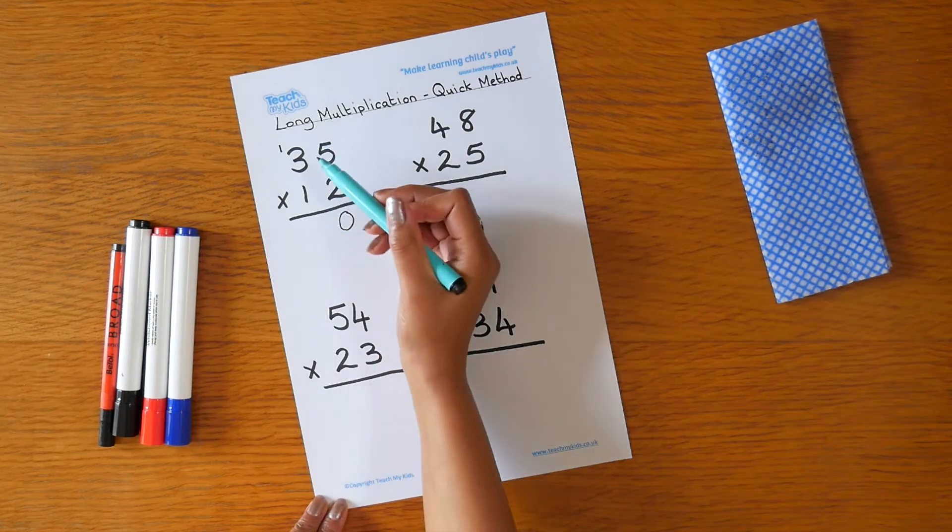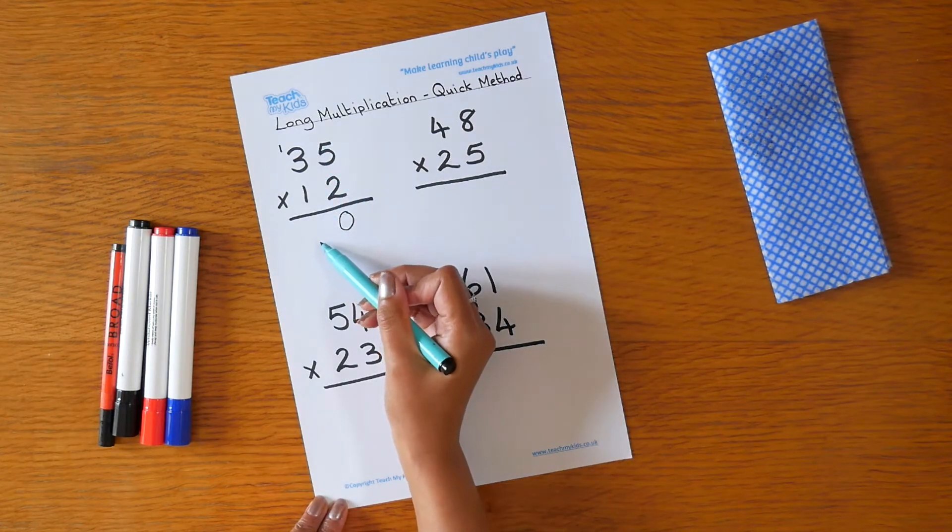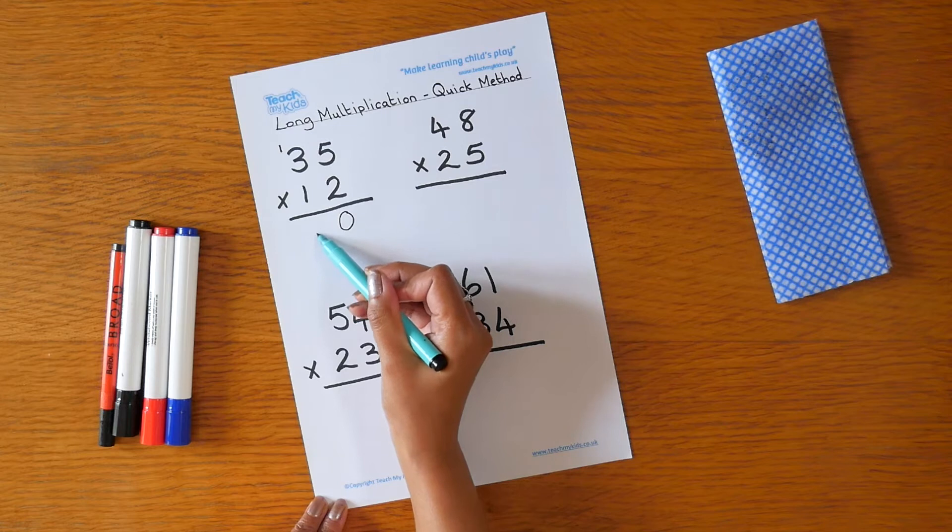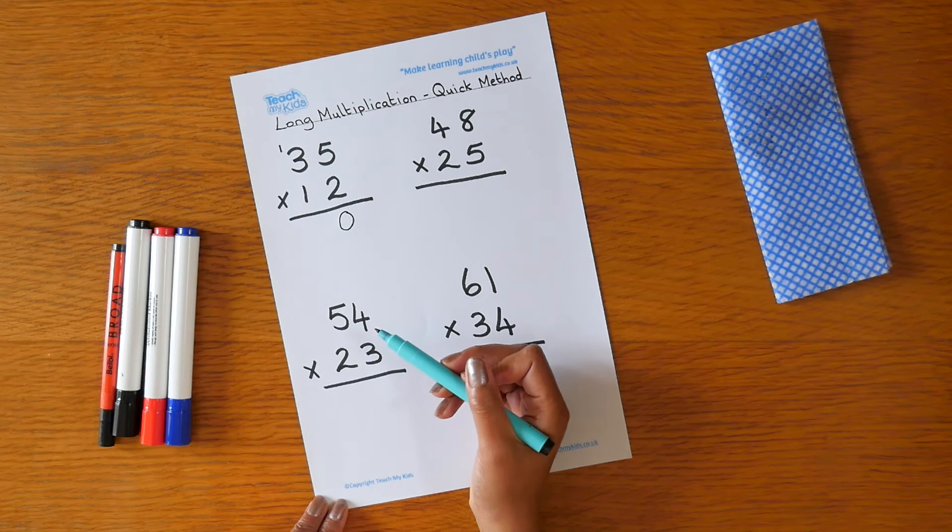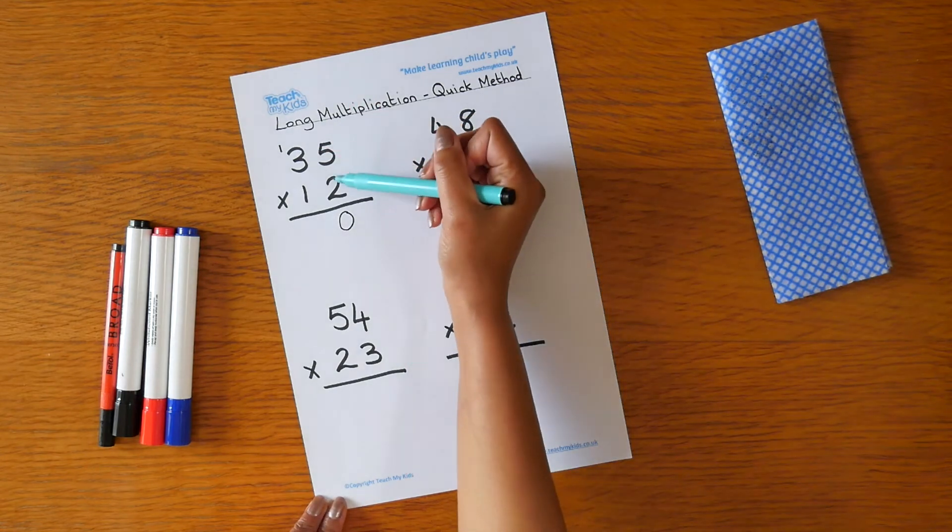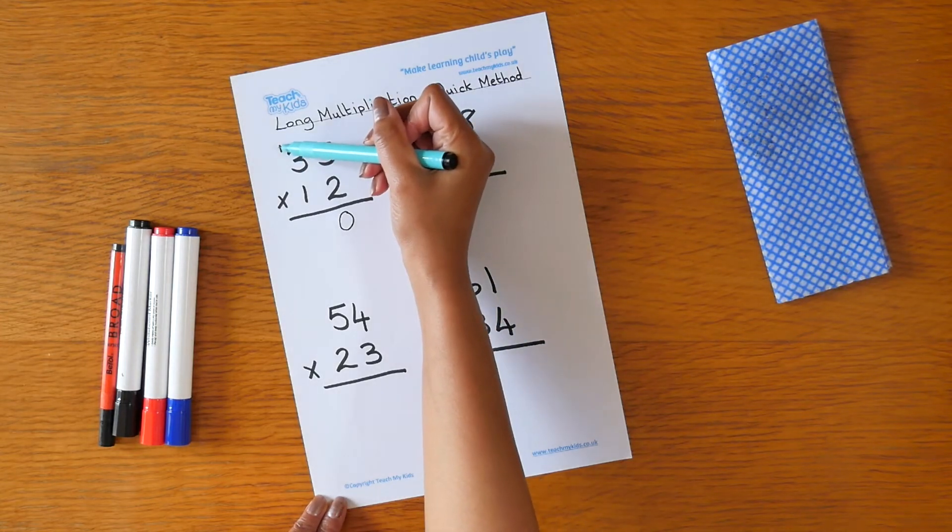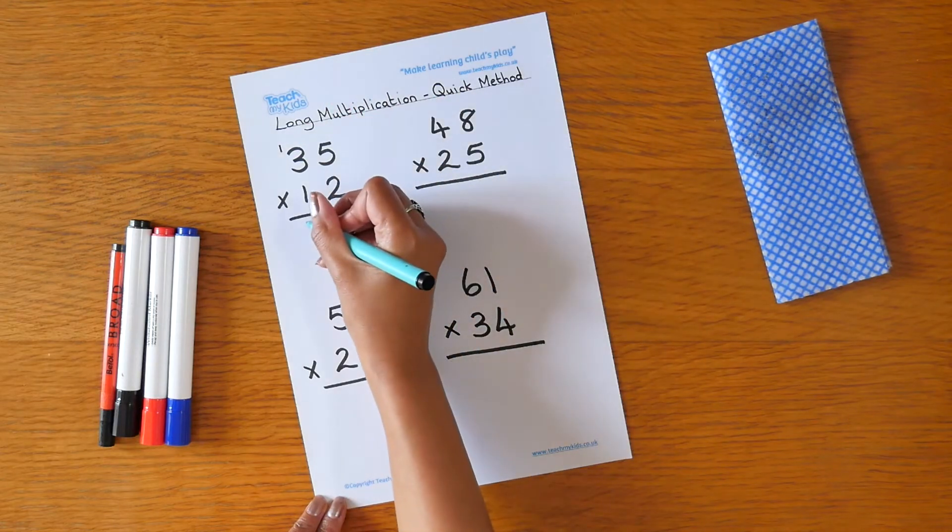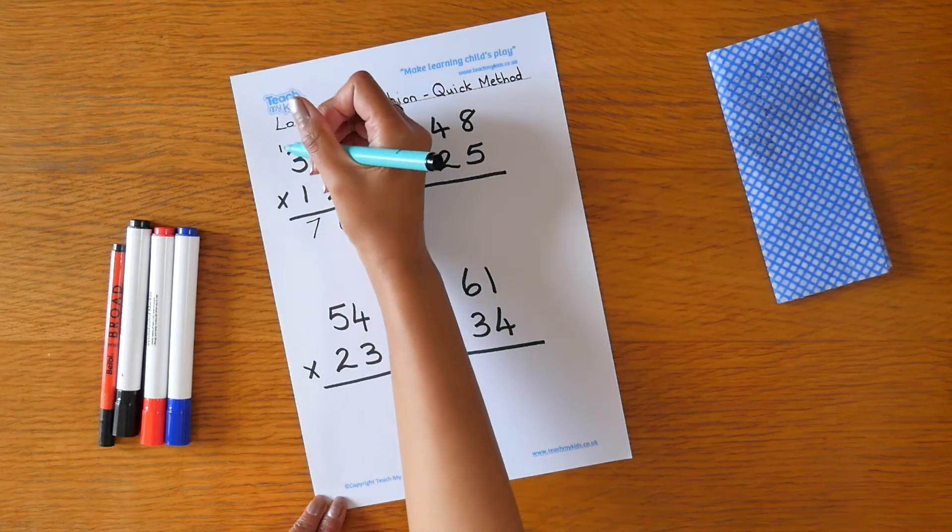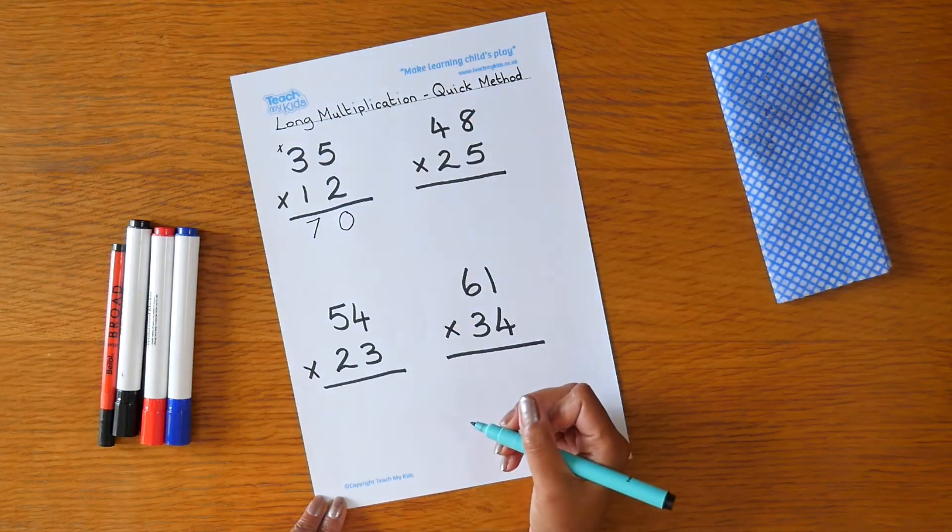If you are used to putting the carrying underneath, that's fine. You can place the 1 underneath here and then add it on to your answer. Our next step is to multiply 2 times 3, which is 6 plus 1, which is 7. I'm going to cross out this 1 to show that I've used it.